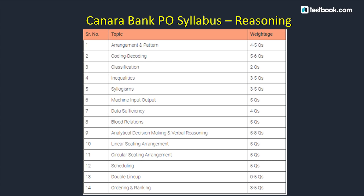For Classification, there will be 2 questions covering letter-based, meaningless word-based, meaningful word-based, number-based, or general knowledge-based classification. For Inequalities, 3 questions covering mathematical inequalities or coded inequalities. For Syllogism, 5 questions including direct questions, possibility-based questions, or negative information-based questions.